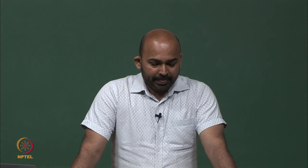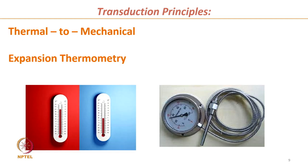Thermal-to-mechanical conversion is illustrated by the mercury thermometer. When exposed to temperature, mercury inside the glass tube absorbs thermal energy. Due to thermal expansion, the level of mercury changes — low temperature gives a low level, and high temperature causes the mercury to rise. This physical change in the material is mechanical in nature and is produced by thermal input, making it a thermal-to-mechanical transduction principle.